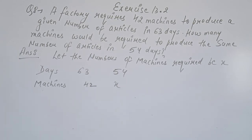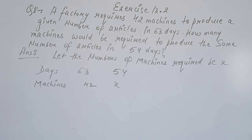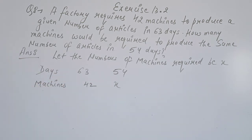Now let's come to question number 8. A factory requires 42 machines to produce a given number of articles in 63 days. How many machines would be required to produce the same number of articles in 54 days? The number of articles remains the same.